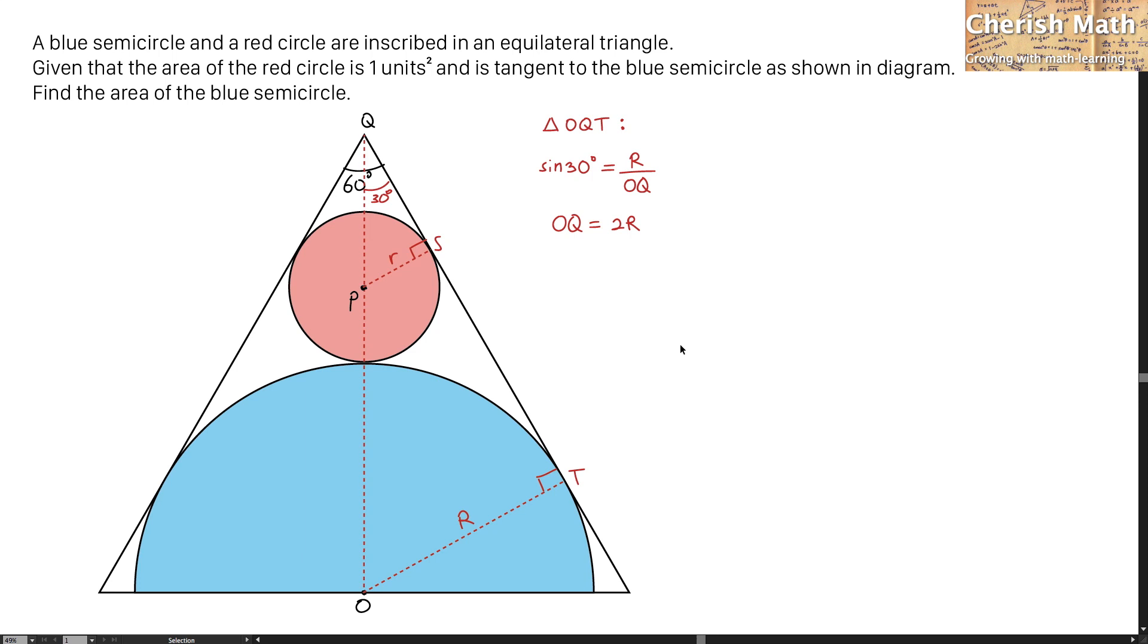I'm going to apply the similar method to find the height of this line PQ. By referring to the triangle PQS and using sin 30°, which equals lowercase r divided by the length of PQ. The length of PQ that I'm getting here is two times the lowercase r.